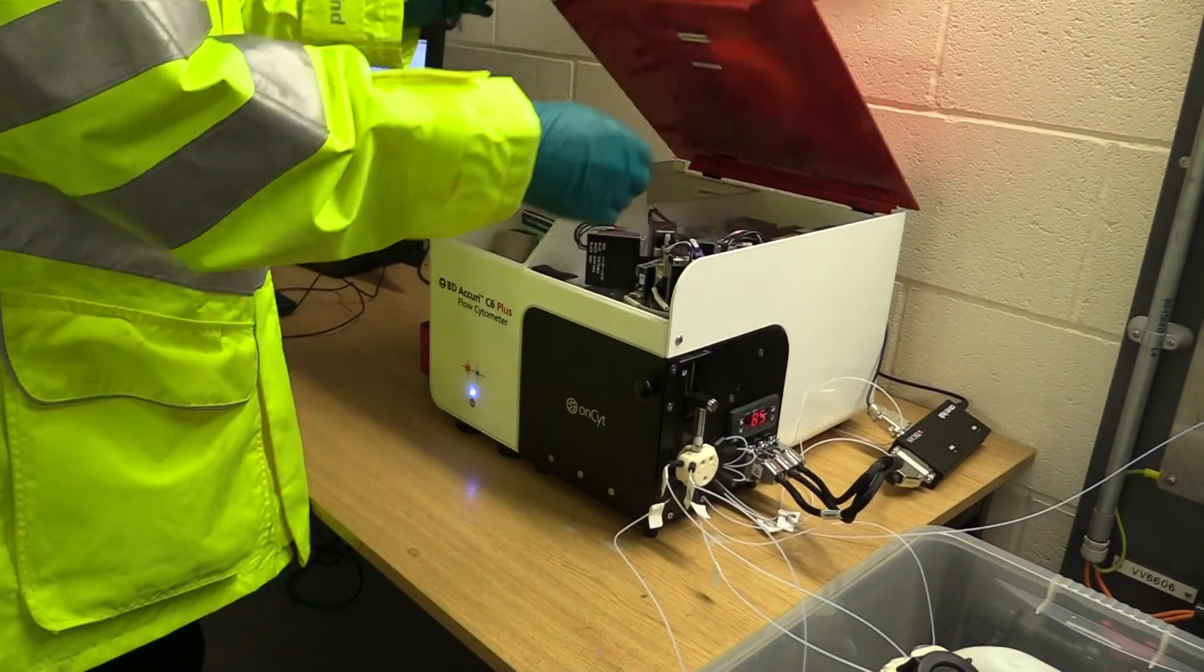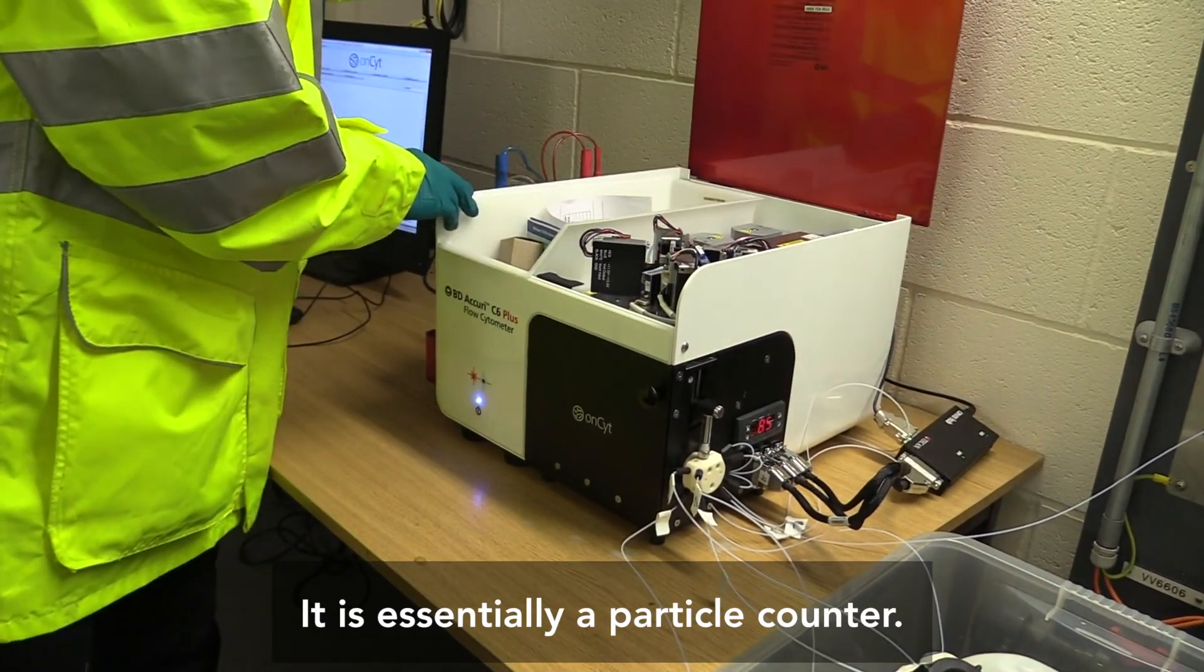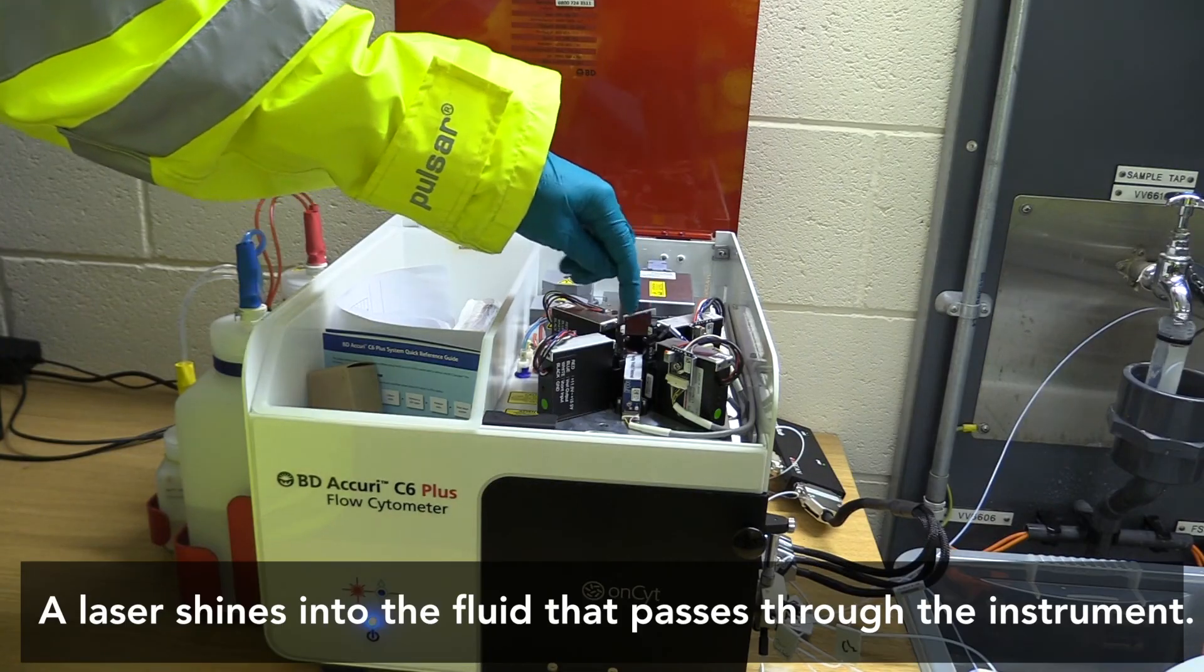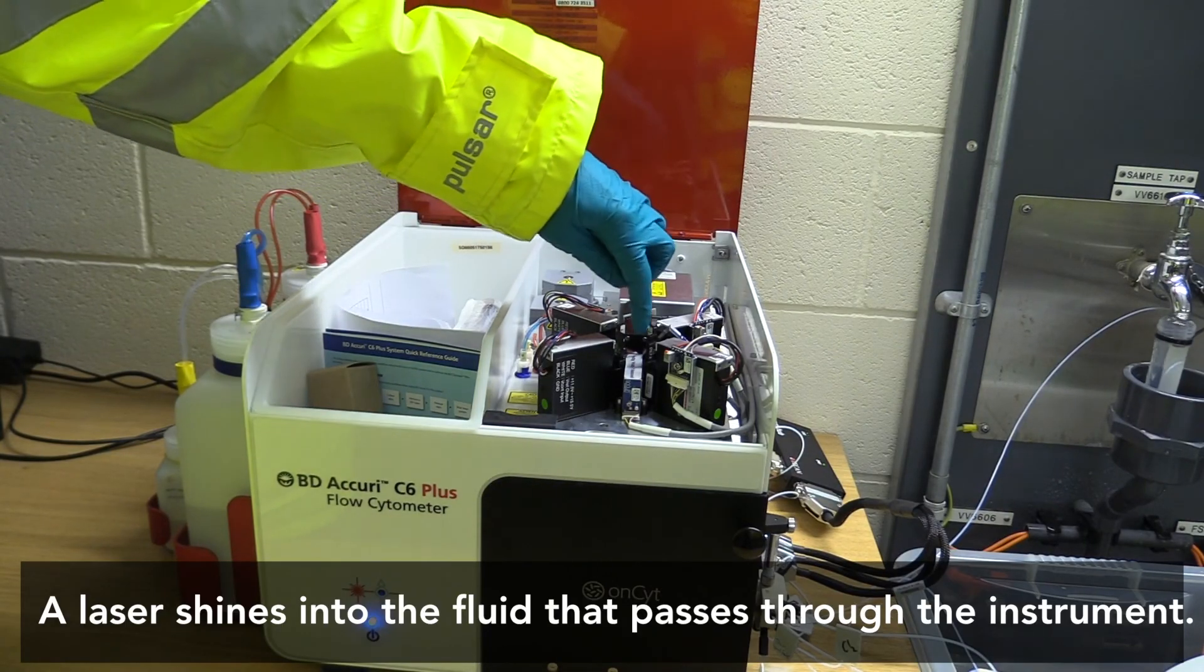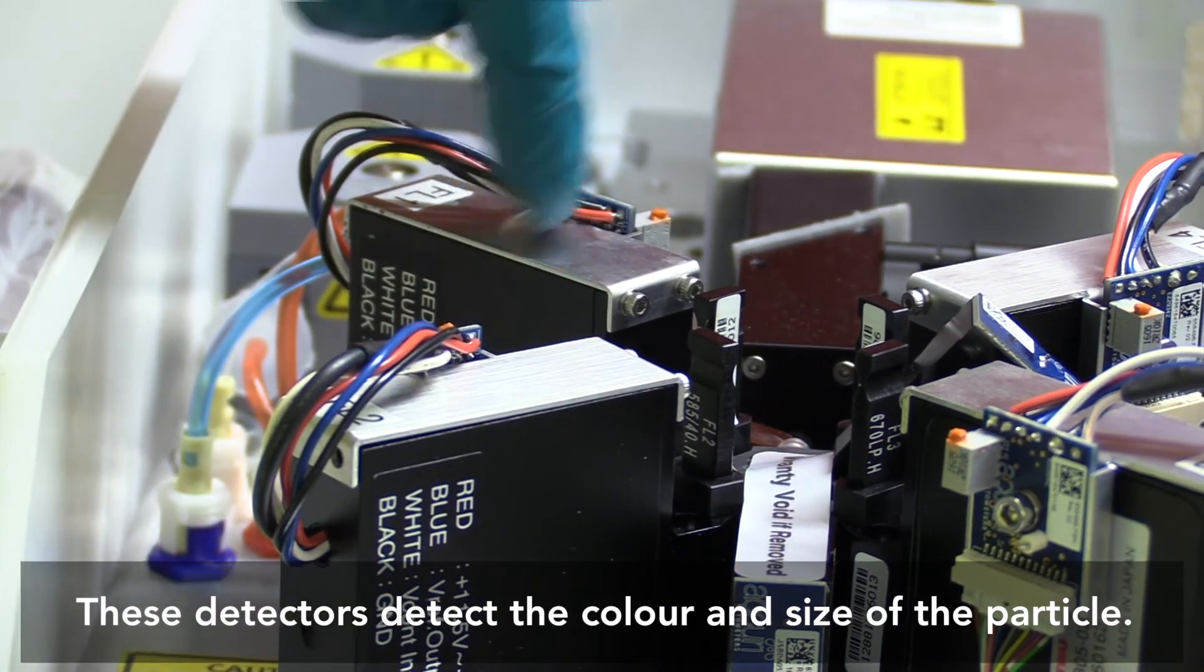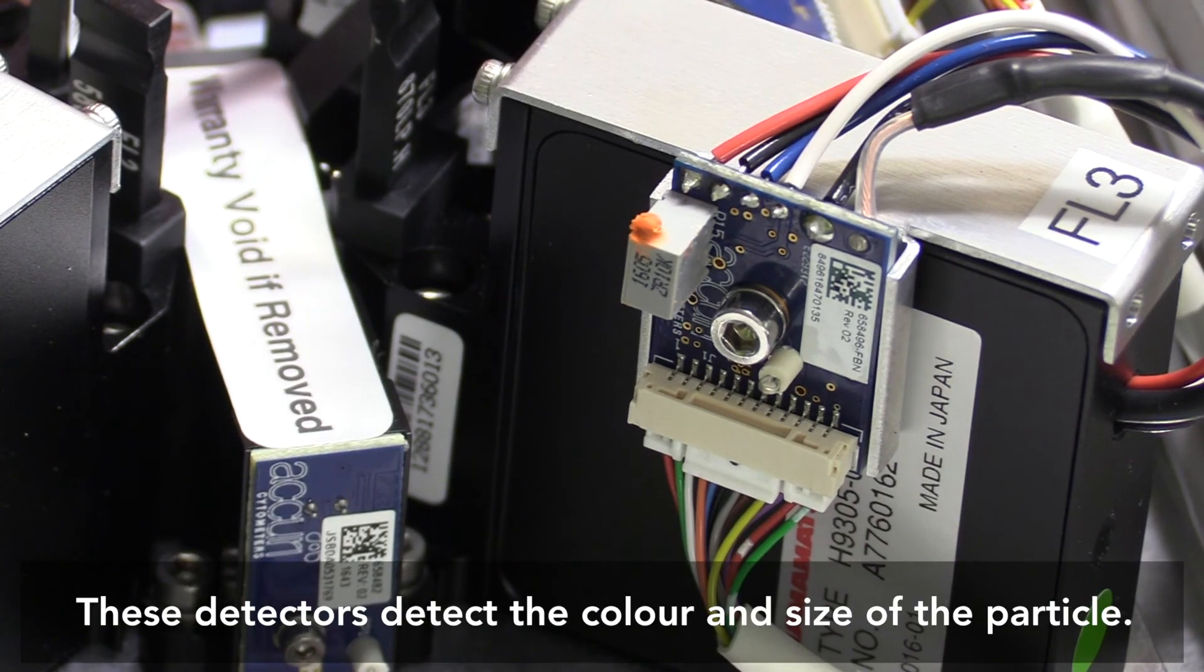Here we have the inside of the flow cytometer and essentially it's a particle counter, that's what we use it for. We have a laser here that shines into the path of the fluid that passes through the instrument and we have a number of detectors. These detectors detect the color and size of the particle.